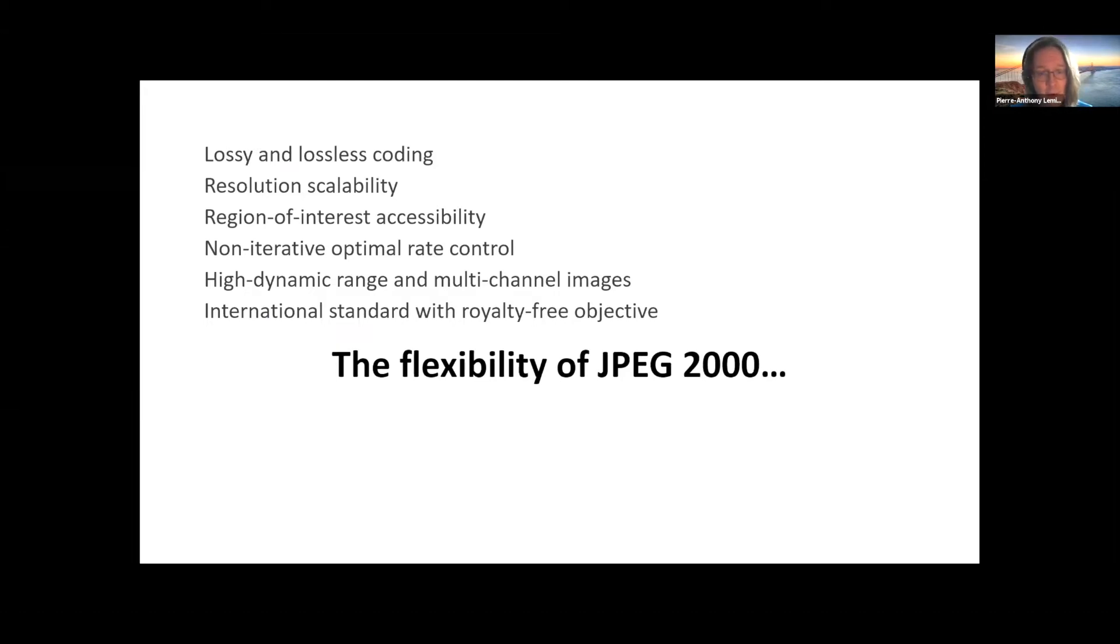And also in the case of JPEG-2000, you start from a basis that's extremely flexible. It can do lossy and lossless. It does resolution scalability, progressive downloading. It does region of interest accessibility. You can have a gigapixel image and just request this one little corner and get it immediately. It doesn't use iterative rate control, supports dynamic range. So for instance, it's regularly used at 16 bit today, can support even higher bit depth, support multi-channel images. So RGB or YCBCR is common, but in the case of raw images, you have typically two green channels. In more specialized applications like astronomy, you might have an infrared channel. And so JPEG-2000 supports all of this out of the box. And finally, it's an international standard with a royalty-free objective.